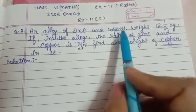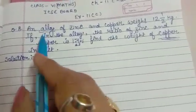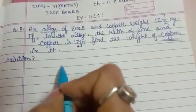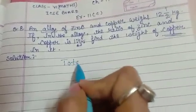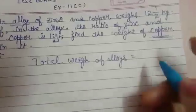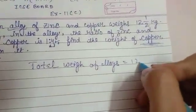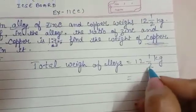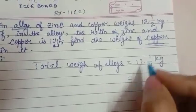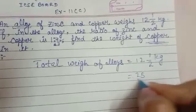So the total weight of alloys. Total it becomes 12 whole 1/2 kg. After solving we get 2×12=24 plus 1 = 25 over 2 kg.